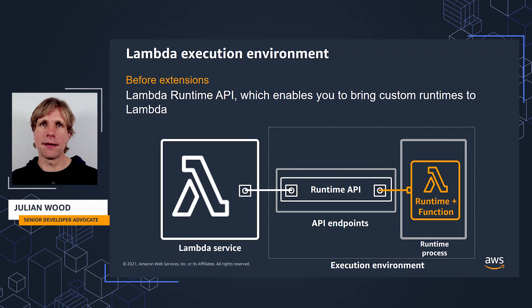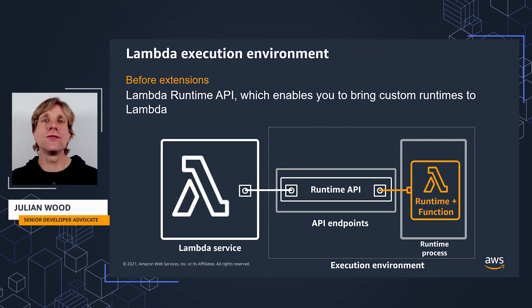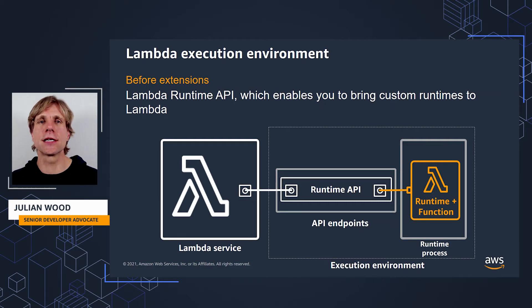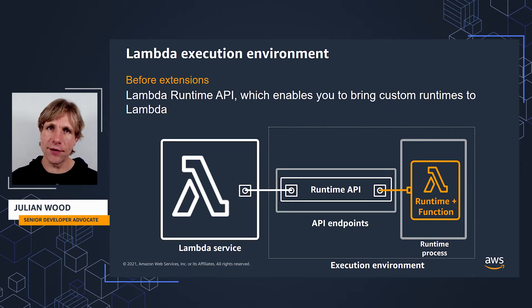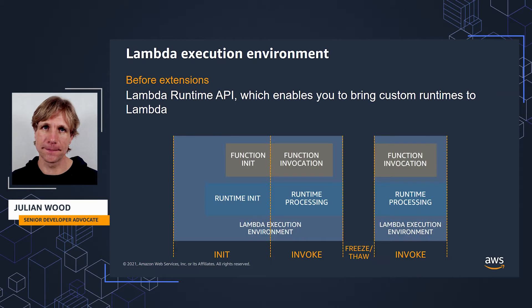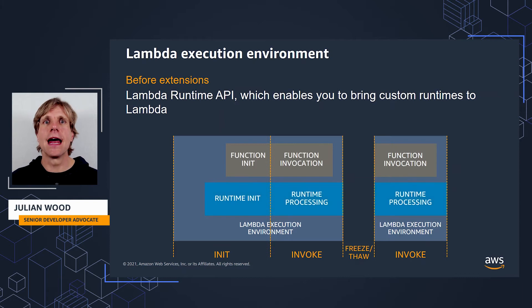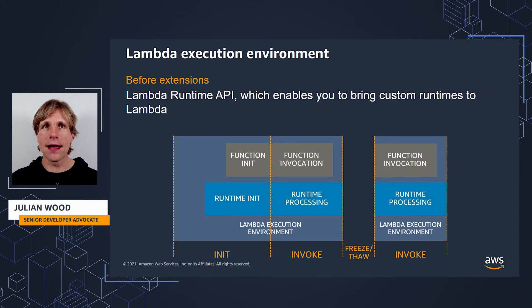When you use a managed runtime, all the communication within the Runtime API is handled by the provided runtime — you just focus on your code. When you bring custom runtimes to Lambda, you include code that communicates with the Runtime API so your custom runtime can receive invocation events from Lambda and send back the results. Before Extensions, there were only two parts to control the execution environment: the Runtime and the function.